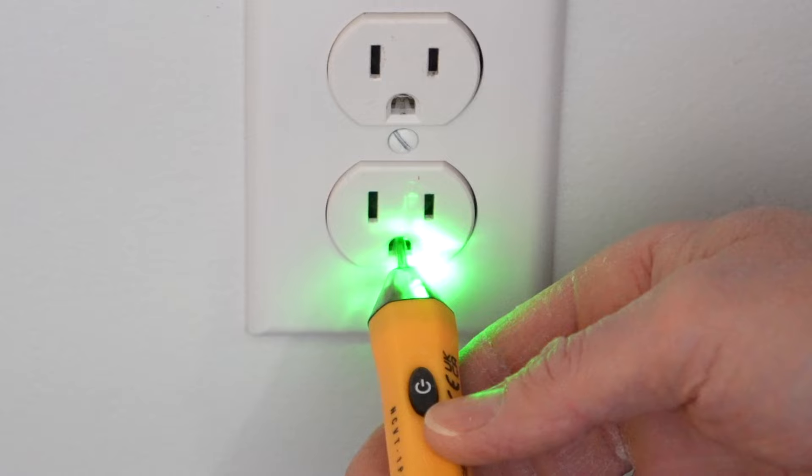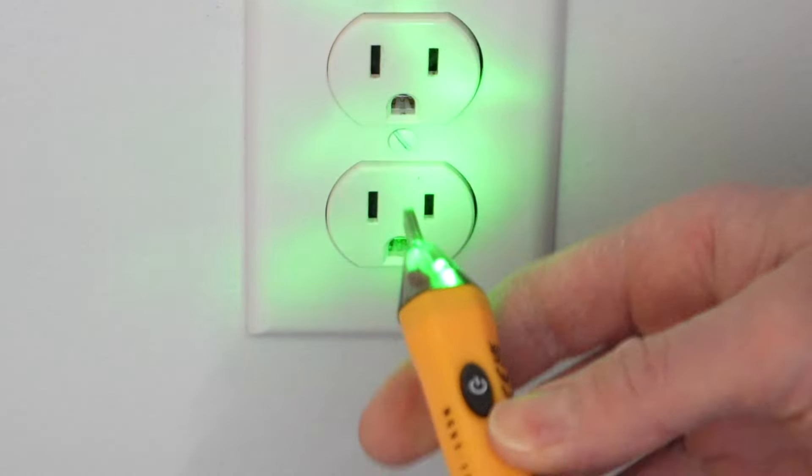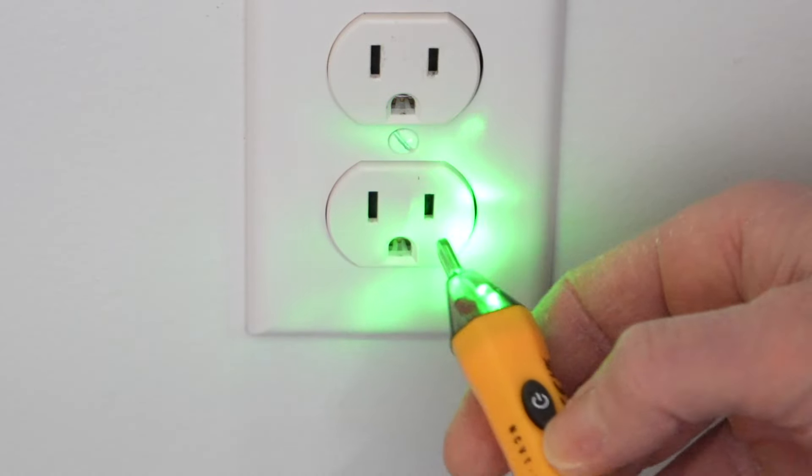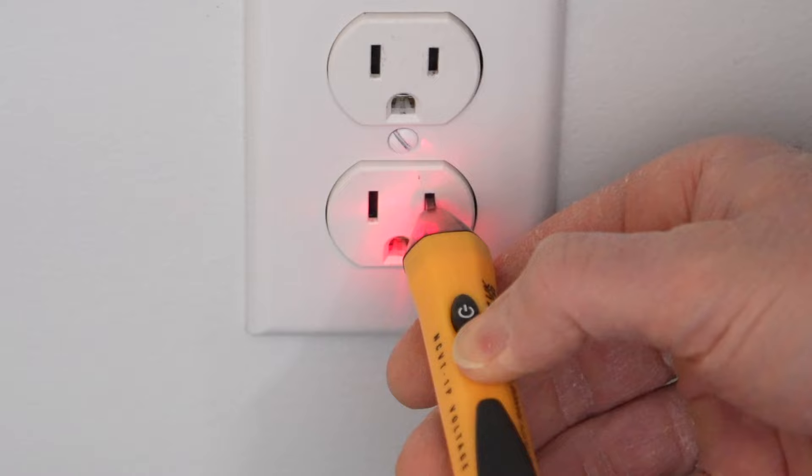If we plug it into the circular part that's for the ground, it's not detecting anything. So we know there's power to this receptacle because it's beeping in the hot side of the receptacle.